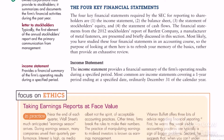The four key financial statements are: one, income statement; two, balance sheet; three, the statement of stockholders' equity; and four, the statement of cash flows. The income statement provides a financial summary of the firm's operating results during a specified period. Most common are income statements covering a one-year period ending at a specified date, ordinarily December 31st of the calendar year.